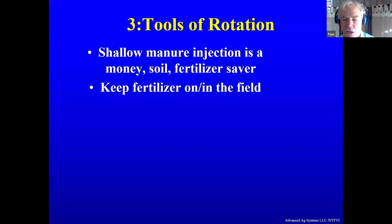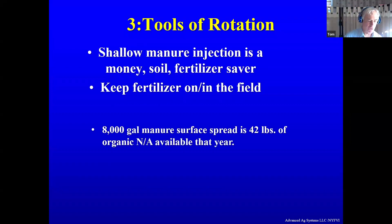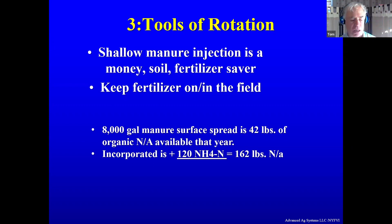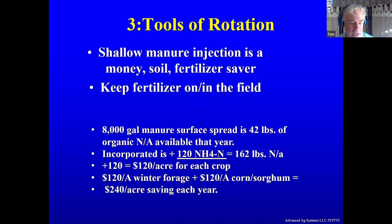Now let's move on to another tool of rotation — one that has come up in the past five to eight years and is really taking hold on farms: shallow manure injection. It saves money, saves fertilizer, and keeps the fertilizer on the field. With 8,000 gallons of manure surface spread, that's 42 pounds of organic nitrogen available. If we incorporate it, we gain another 120 pounds — 162 pounds of nitrogen total — simply because we stuck it in the ground immediately. That is a lot of money: $120 an acre is what you are saving. If you're doing a winter forage and then corn or sorghum, you inject manure for both crops and end up saving $240 an acre, and that fertilizer is in the ground — not washing away, not going into streams.